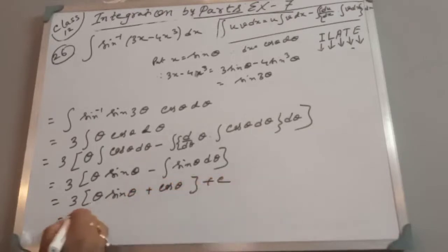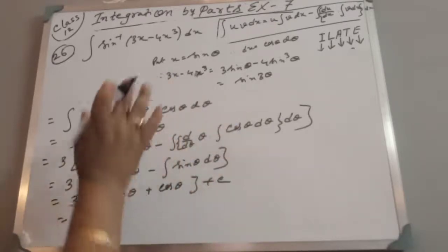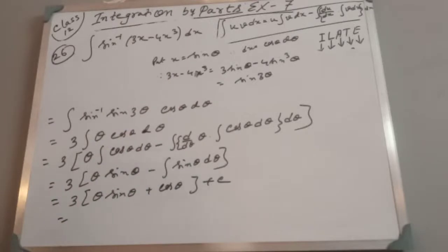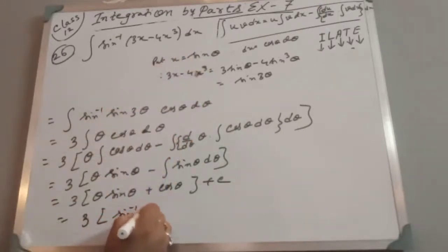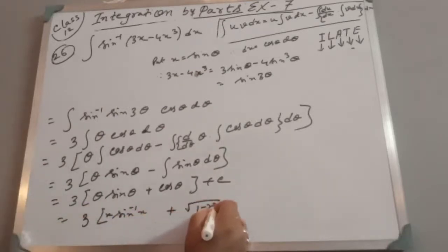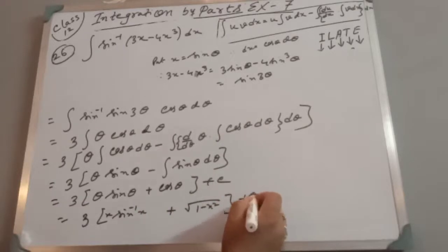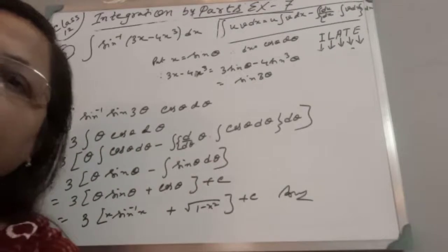Now substitute back in terms of x: θ = sin⁻¹x and sin θ = x, so cos θ = √(1 - x²). The final answer is: 3[x · sin⁻¹x + √(1 - x²)] + C.